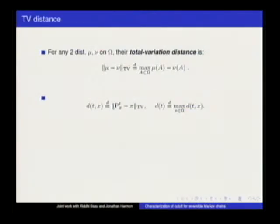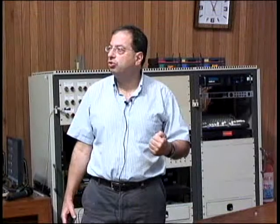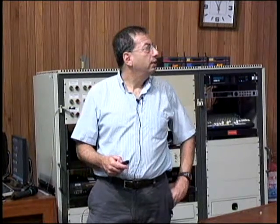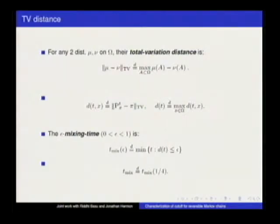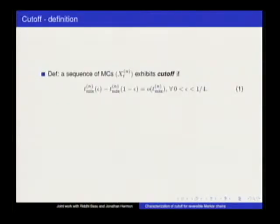D(T) measures, from the worst starting point, how far we are at time T from the stationary distribution. The epsilon mixing time is the minimum time that ensures D(T) will be less than epsilon. D(T) is a monotone weakly decreasing function of T, so once D(T) is below epsilon, it stays that way. We write T_mix for T_mix of a quarter. With this notation, chains exhibit cutoff if T_mix hardly depends on epsilon—in other words, T_mix(epsilon) and T_mix(1−epsilon) are smaller order than T_mix itself.